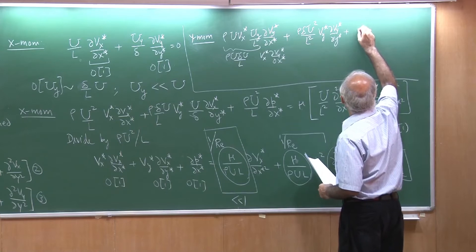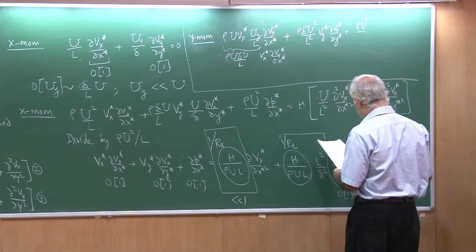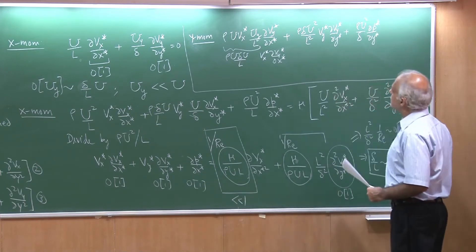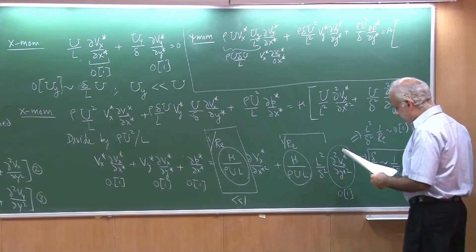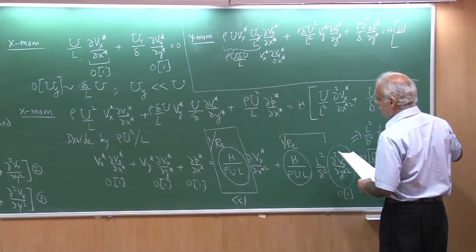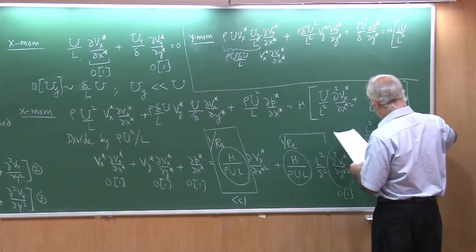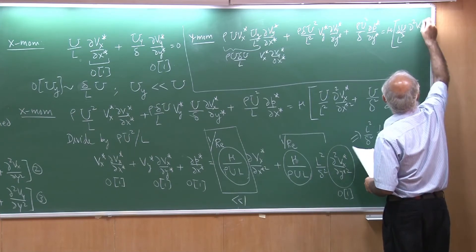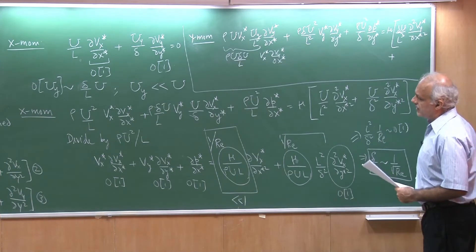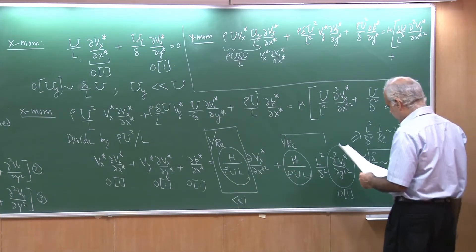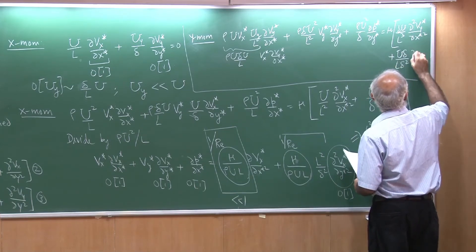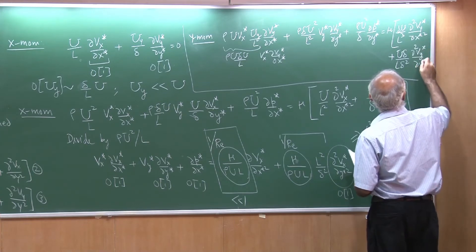For the pressure term, I am going to get rho u squared by L by delta, because now I have del p star by del y star. Then I have to write down the viscous terms. From the viscous terms, they are going to be delta u by L cubed times del squared Vy star by del x star squared, plus the second derivative of the y velocity which would be u times delta u times delta by L delta squared times del squared Vy star by del y star squared.